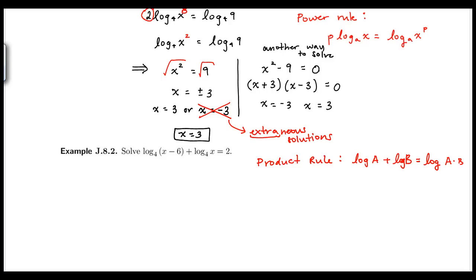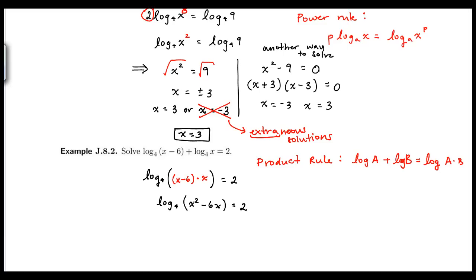I'm going to combine these two using the product rule, so I'll have one log on the left side, base 4, of x minus 6 times x, equal to 2.